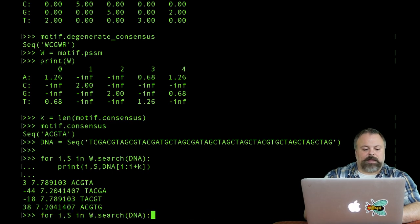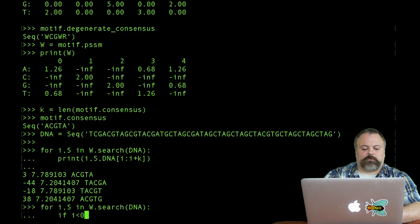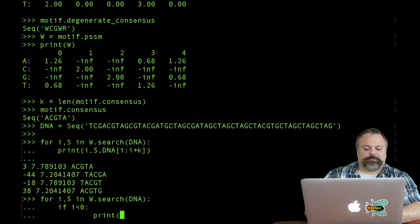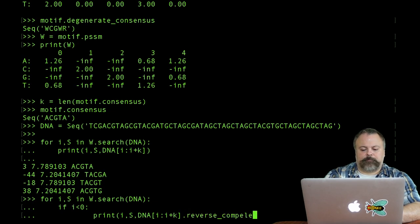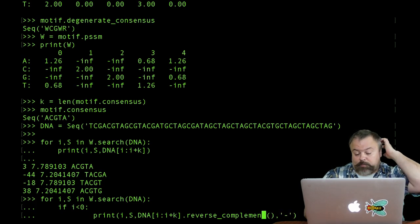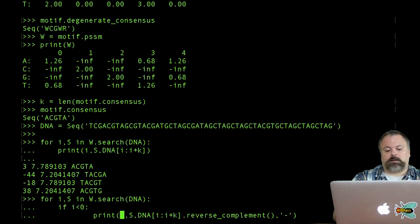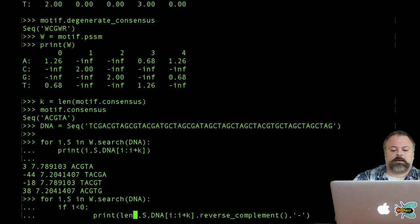We can correct for that by adding an if statement to our for loop. If the position i is negative, we can print our positions, scores, and DNA k-mers with the reverse complement and also add an additional column to give our strand. Our positions i, we can actually correct for that by defining them relative to the len of the DNA. This should give us our positions in the forward strand. Hopefully. Maybe we can check an example unless it's off by one.